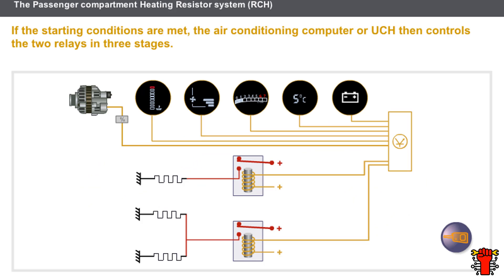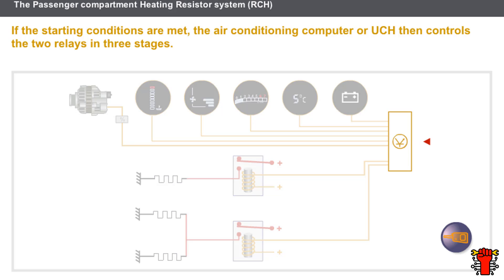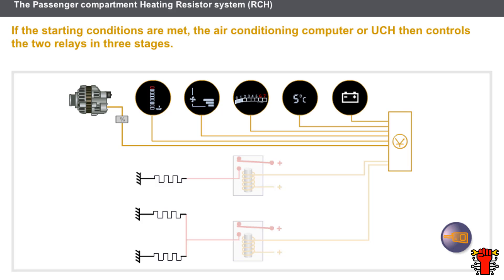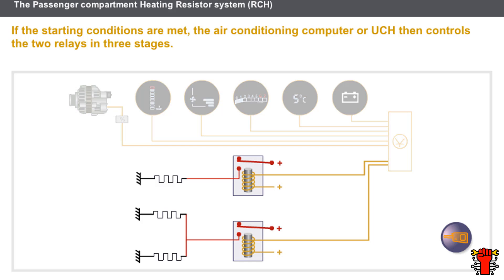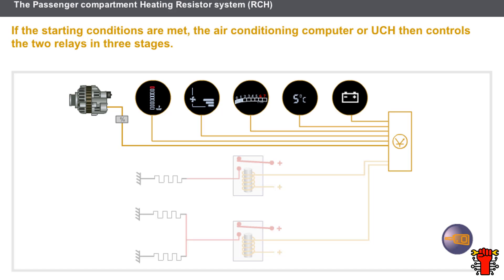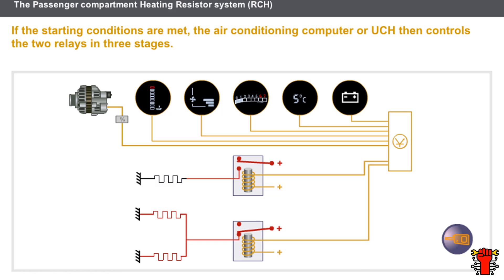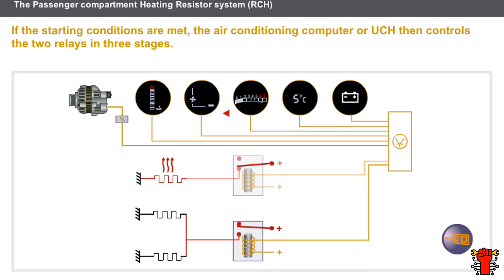Let us look in detail at the control of the RCH system. The air conditioning computer or UCH controls the heating resistors according to the heat requirements and in accordance with the electrical load value. A system with 3 steps has 2 relays: 1 relay controls 2 steps, and the 2 relays together control the 3 steps. If the starting conditions are met, the air conditioning computer or UCH controls the 2 relays in 3 stages: 1 relay controls 1 step; the computer or UCH cuts off the supply from the first relay and controls the second relay; then the computer or UCH controls both relays together. If some conditions have not been met, the air conditioning computer or UCH modifies the control of the relays according to the new heat requirement.